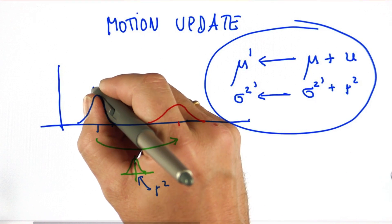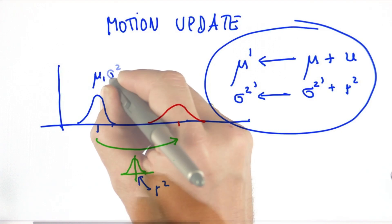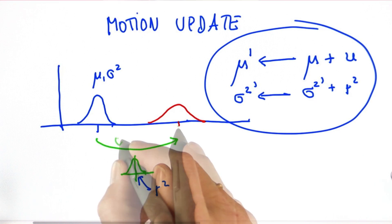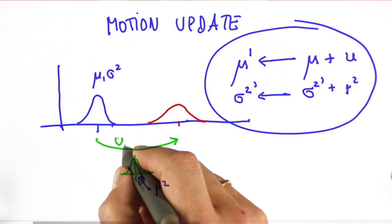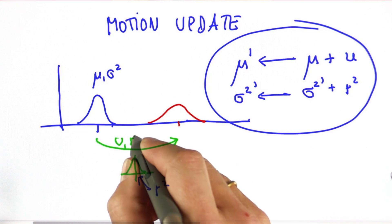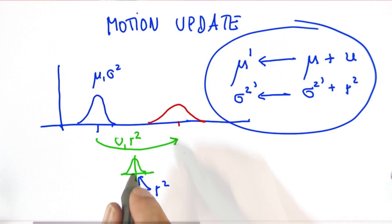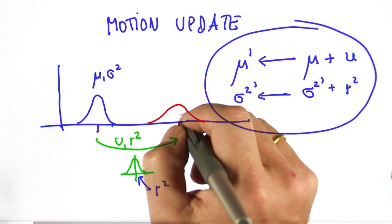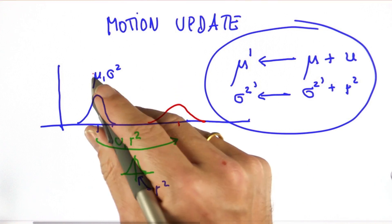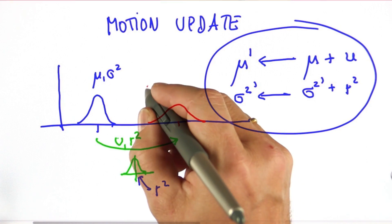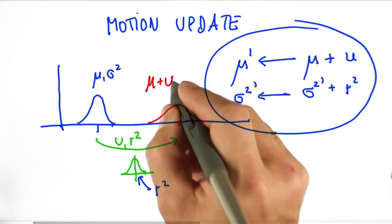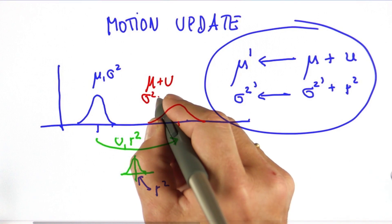But in summary, we have a Gaussian over here. We have a Gaussian for the motion with u as the mean and r squared as its own motion uncertainty. And the resulting Gaussian in the prediction step just adds these two things up, mu plus u and sigma squared plus r squared.